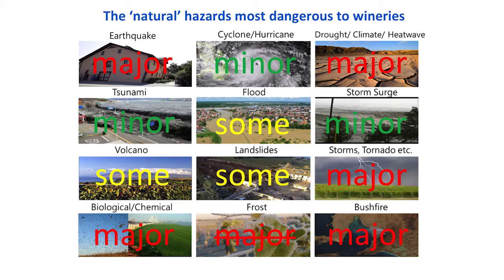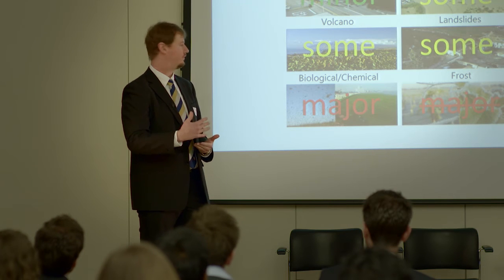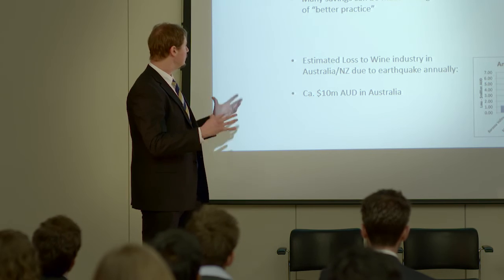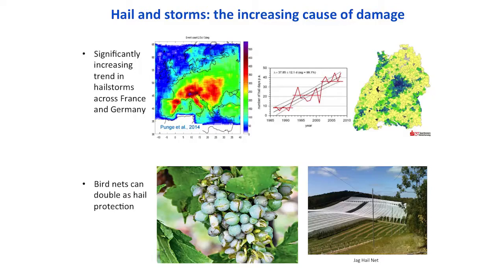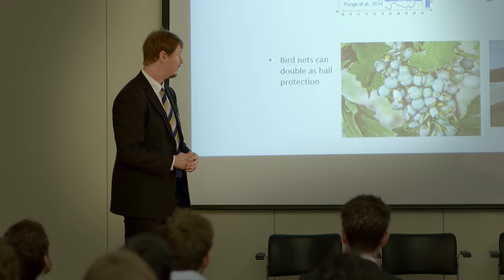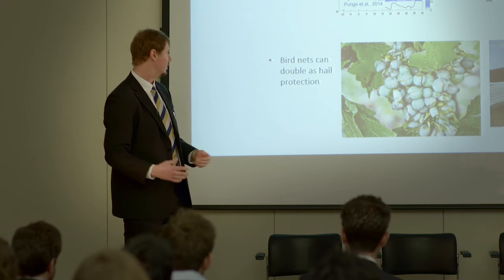Frost is something that has affected a lot of wineries across the globe in recent years. However, they are doing a lot to mitigate the risks of frost using wind fans and other techniques. For earthquakes specifically, there are problems for steel tanks, for wineries themselves, and for breakage of bottles. Many savings could have been made in recent years from just a few dollars of better practice. We can expect about $10 million in annual average loss in Australia, most of it from big events. Hail is also an extremely big problem for wineries across France and Germany, with an increase from over 10 hail days in 1985 to over 45 hail days in 2015, causing huge losses in the Burgundy region.